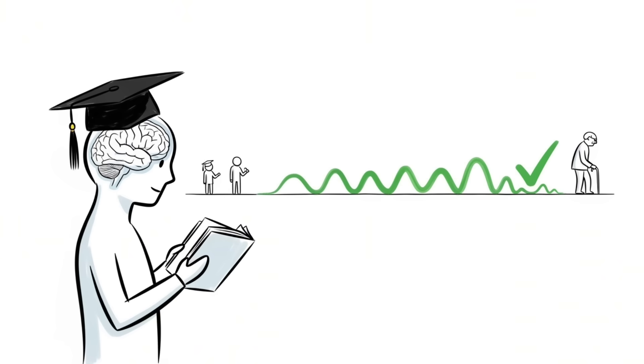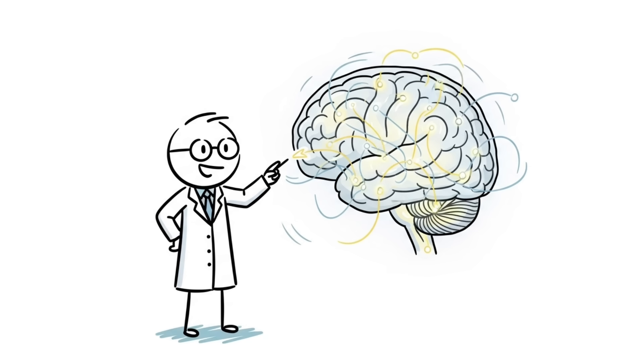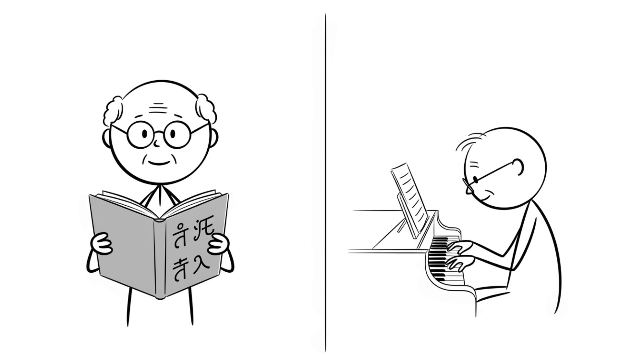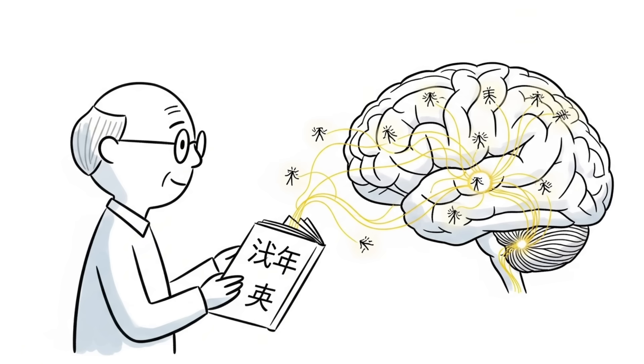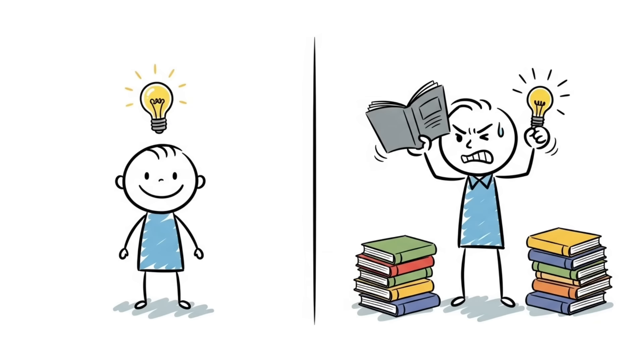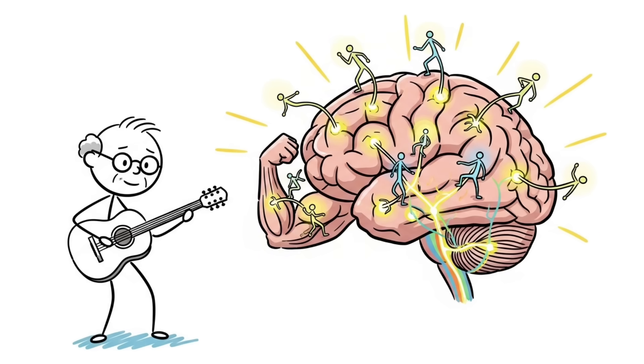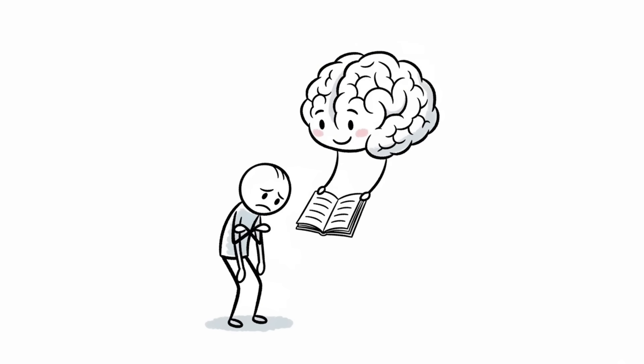The truth is, your brain is a lifelong learner. Scientists now know about neuroplasticity, which is just a fancy word for your brain's ability to rewire itself and form new connections at any age. Even at 80, you can learn a new language or how to play the piano. Your brain will create new neural pathways. While it might take a little more work than when you were a kid, it's completely possible. Your brain is a muscle that gets stronger the more you use it. So if you've given up on a skill, thinking you're too old, your brain is just waiting for you to get started.